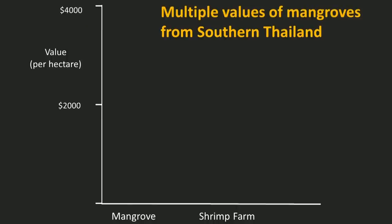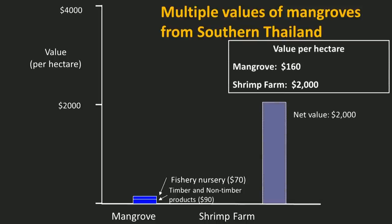A study in Thailand illustrates this clearly. The question was whether to clear mangroves and create shrimp aquaculture ponds. Looking at the value per hectare on the y-axis, estimates of some natural mangrove services — timber, non-timber products, and nursery habitat — were relatively small. The perceived value from clearing mangroves and developing a shrimp pond appeared much greater: around $2,000 compared to roughly $160. Stopping there, you might conclude the best option is to clear the mangroves — but that is only part of the story.